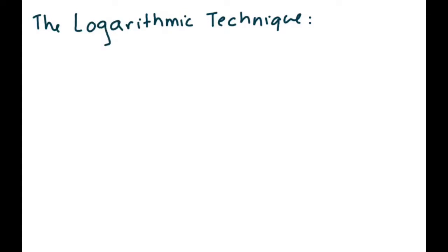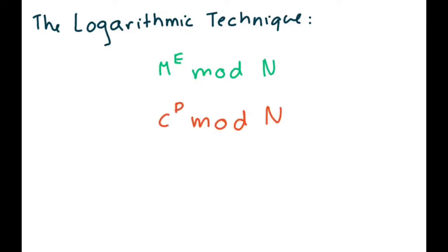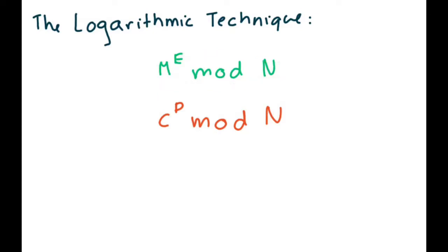Recall that encrypting a secret message requires plugging that secret message m into the expression m to the e power mod n, and decrypting that message requires plugging in the result of m to the e mod n — also known as c — into the expression c to the d mod n to attain the original message m. The message interceptor, like all others, has access to the public key values of n and e. He can generate a secret integer message m and plug it into the expression m to the e power mod n to attain the ciphertext or encrypted message c.